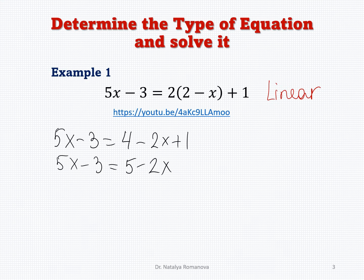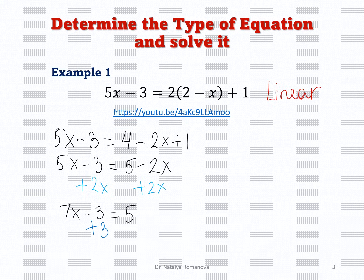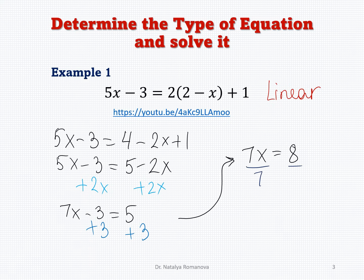Now we isolate the variable. Add 2x to both sides: 7x minus 3 equals 5. Now add 3 to both sides: 7x equals 8. Divide both sides by 7, and the answer is x equals 8 over 7.